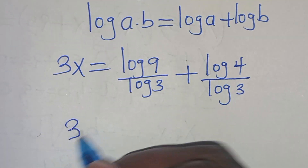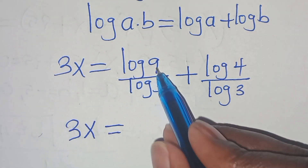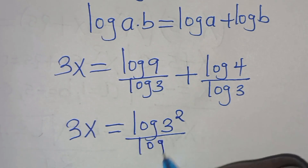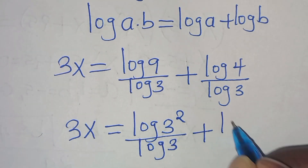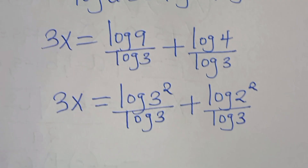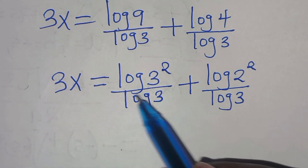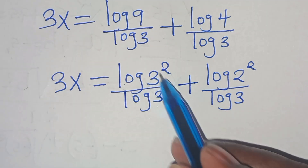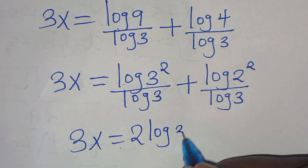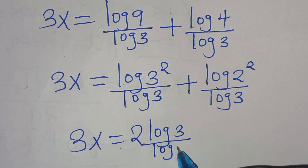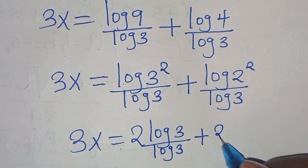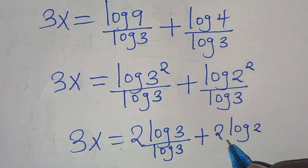Now, log 9 is the same as log 3 to the power of 2, divided by log 3. Then plus log 4, which is log 2 to the power of 2, divided by log 3. Applying the power rule property, log 3 to the power of 2 becomes 2·log 3, divided by log 3, plus 2·log 2 divided by log 3.